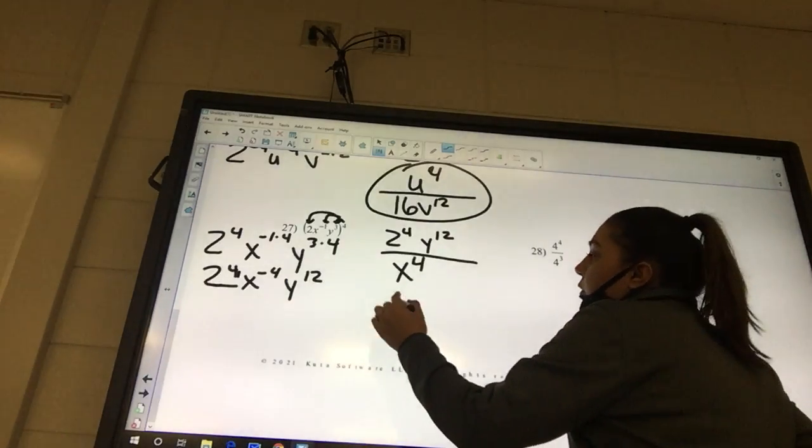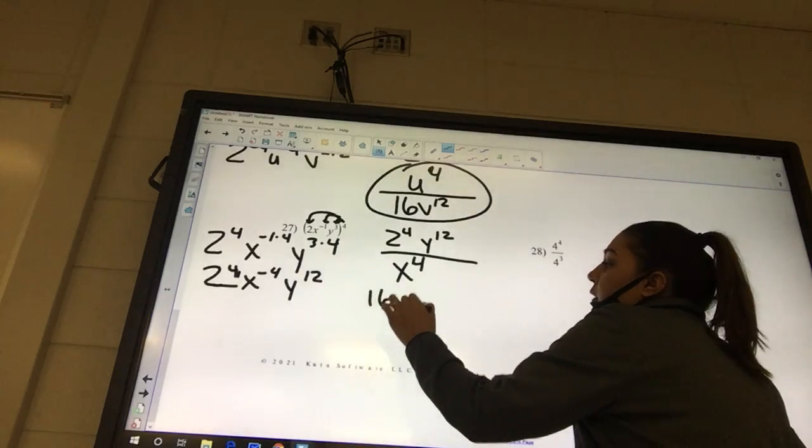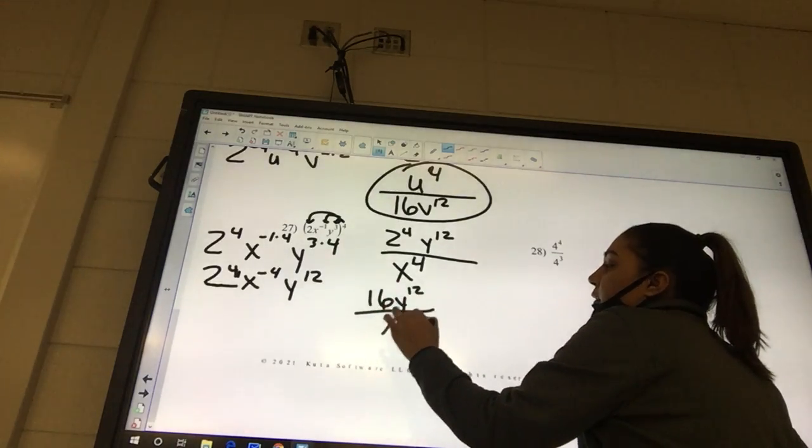Okay, and we already know from the last problem that 2 to the 4th is 16. And you're going to have y to the 12th over x to the 4th.